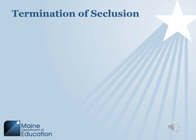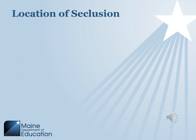One difference between restraint and seclusion is that Chapter 33 provides guidelines for where seclusion can take place. Seclusion can occur in any part of the building or on premises, including a clearly defined area. However, if a specific room is designated for seclusion, it must have adequate light, heat, and ventilation, normal room height, 60 square feet of space, an unbreakable observation window, and be free of hazardous materials or objects with which a student could harm themselves.